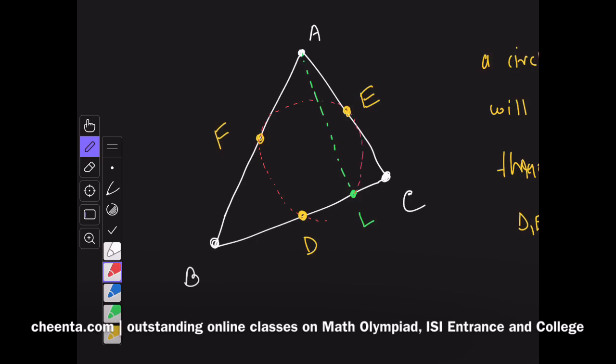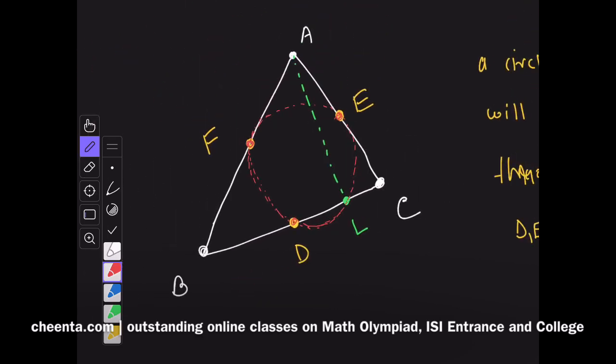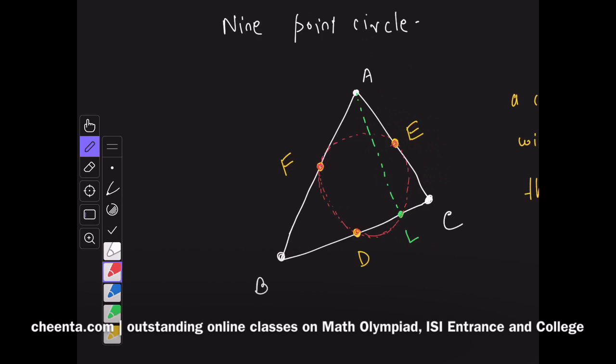This is of course not obvious. Through three non-collinear points D, E, F I can always draw a circle, but there is no guarantee that this circle will also pass through this point L. That's the part that we need to prove. In fact, we want to show that this particular circle passes through the midpoints, the feet of altitudes, and three other special points which we will discuss in the next video.